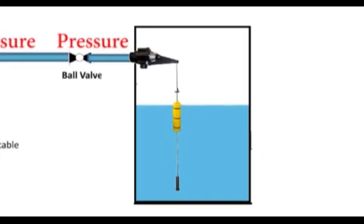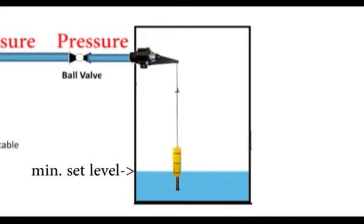Now, as water is used, float of differential float valve travels downward. Once it reaches to minimum set level, it will stop traveling with the help of low level stopper.